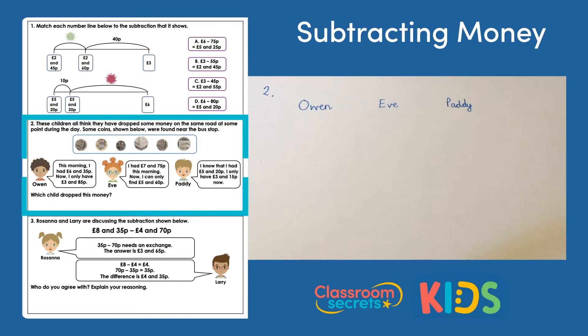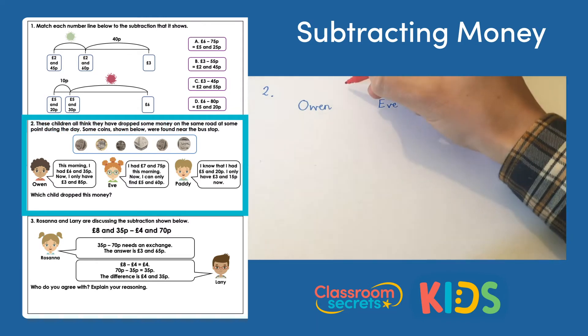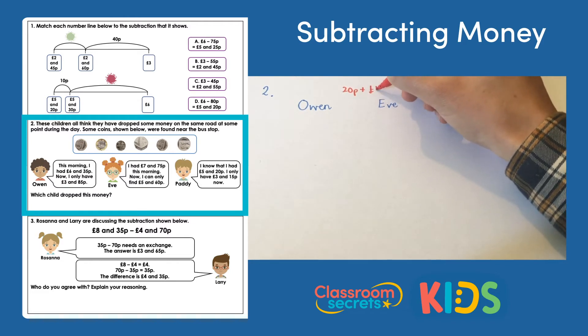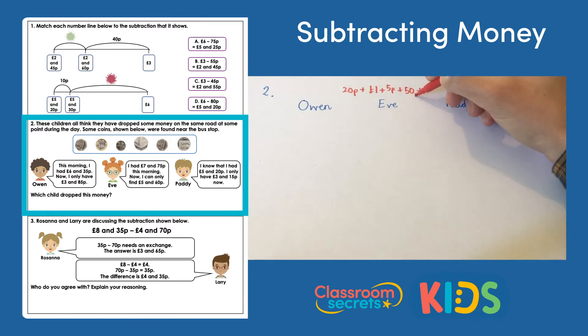So looking at question two, we need to find out which child has dropped the money: Owen, Eve, or Paddy. First thing we need to do is add up those coins. So we have a 20 pence add a pound add 5 pence add 50 pence add 20 pence and add a 10 pence. Start with the biggest, that's a pound. One pound add the 50, you can even cross them off. One pound 50. Then add the 20, one pound 70. Add that 20, one pound 90. Add the 10 is two pounds.